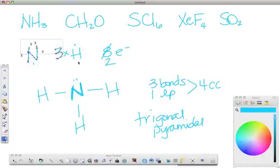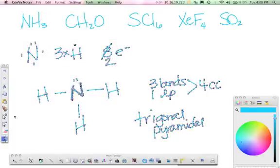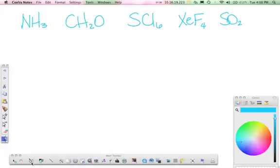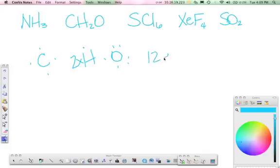Moving on to CH2O. Carbon has four dots, we've got two hydrogens each with one, and oxygen has six. That gives us a total of twelve electrons. If there's a carbon, it automatically goes in the center, the other guys go around it. Hydrogens, oxygen, and connect them.